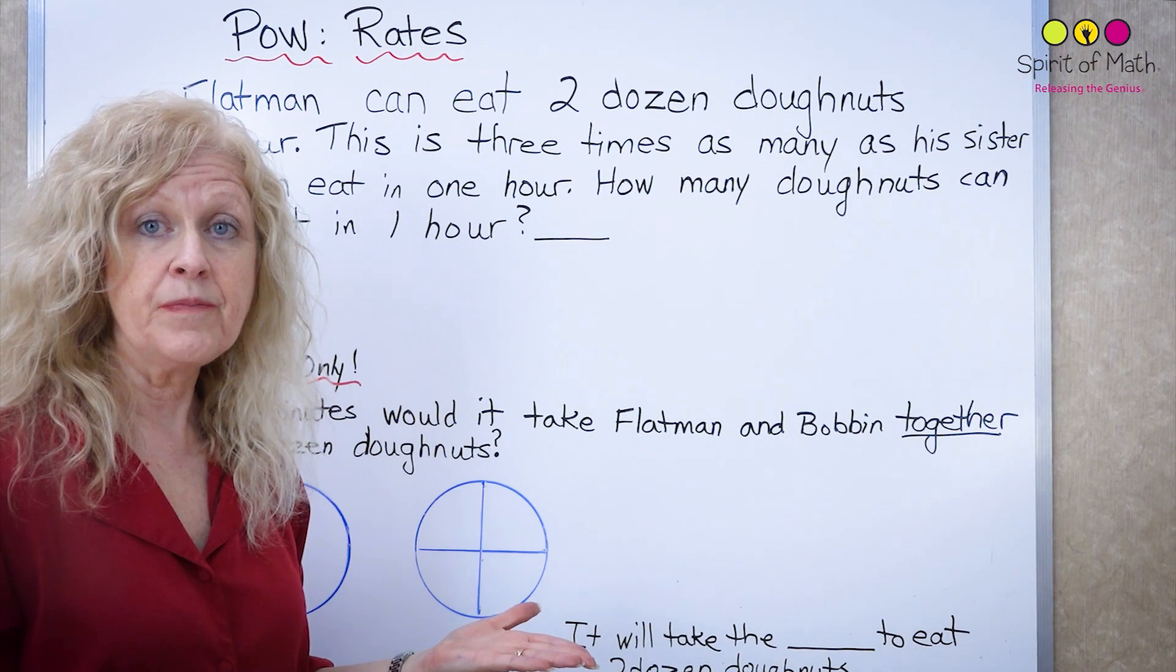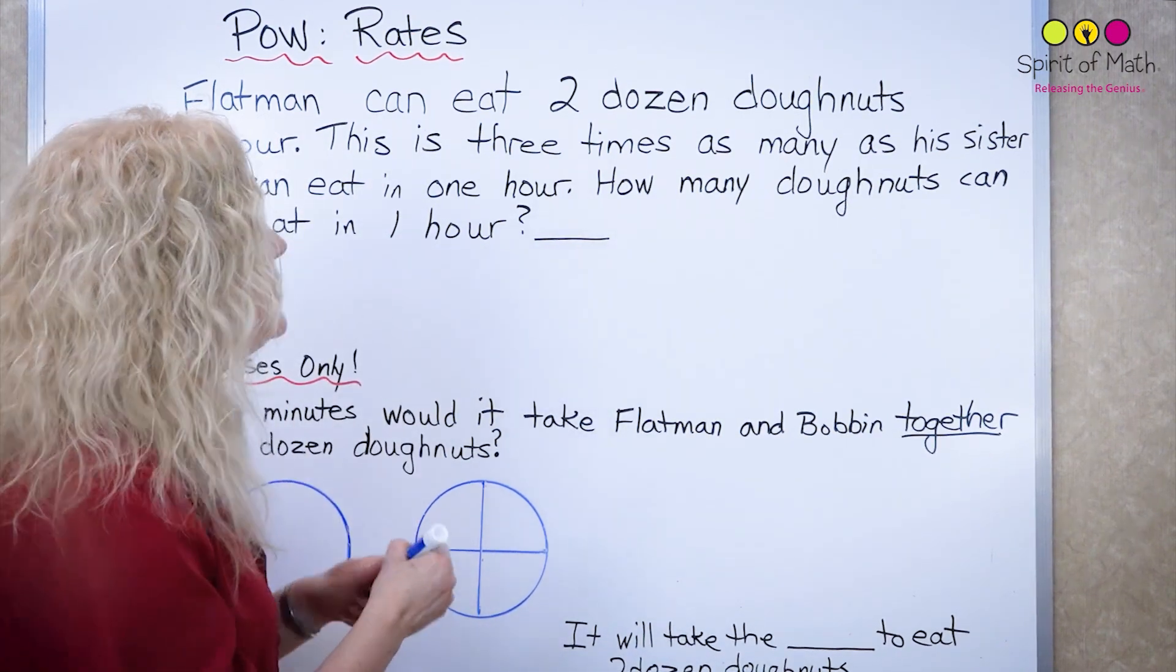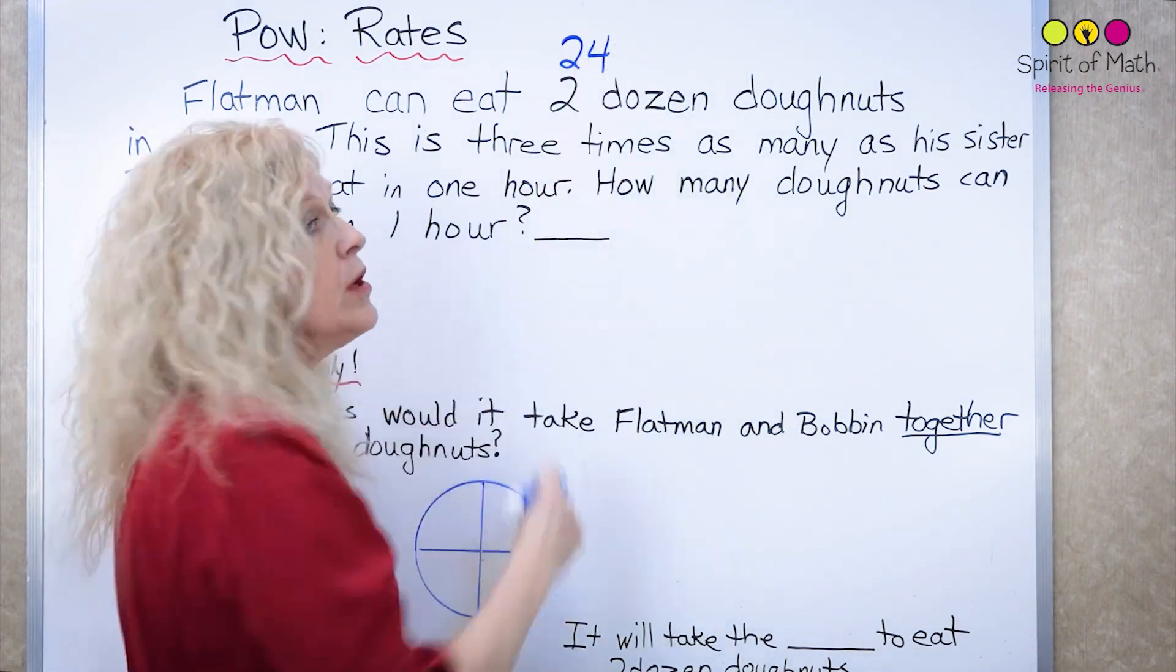So that's your first question. So it says Flatman can eat two dozen doughnuts. So two dozen is 24 doughnuts.